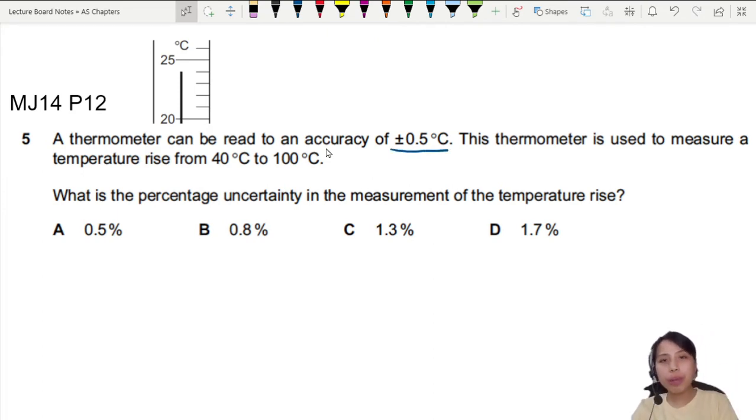Well, for thermometers specifically, when you look at standard ones, the smallest division is typically one degree Celsius. But each time you look at a reading, let's say I'm trying to take a measurement here, I put my eye there, every time your eye looks, the uncertainty will be plus minus half the smallest division. So I'm going to say half the smallest division, which is going to be 0.5 Celsius.